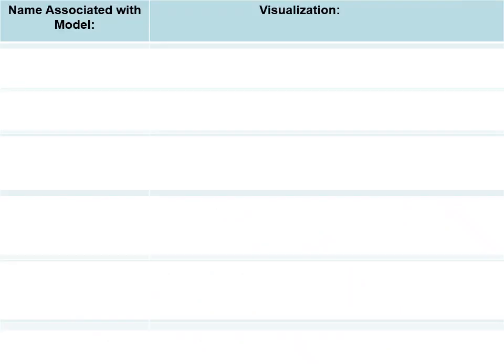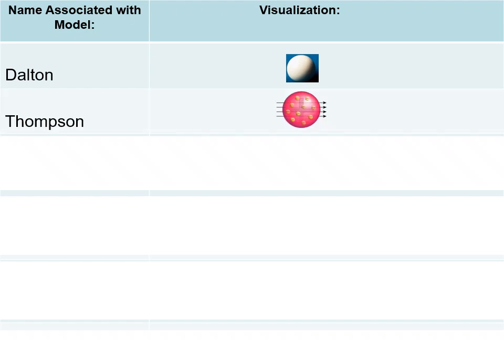To summarize, we start with Dalton with the billiard ball model—one solid sphere, nothing too exciting going on there, but pretty big idea that matter is made up of particles and it's not just the four elements but there's many of them. Thompson then incorporated electrons, but unfortunately didn't get the nucleus part figured out.